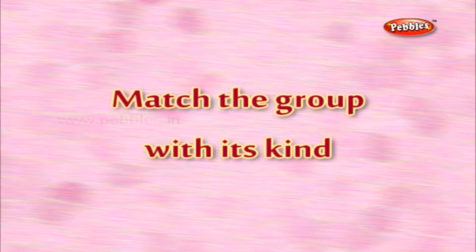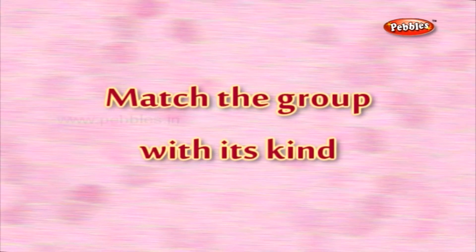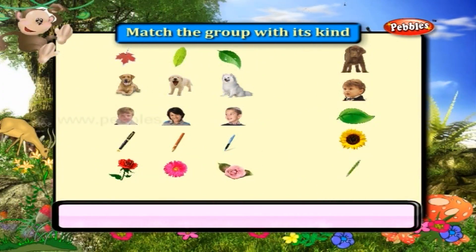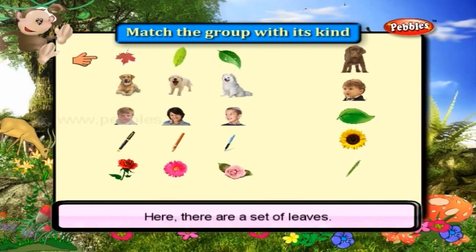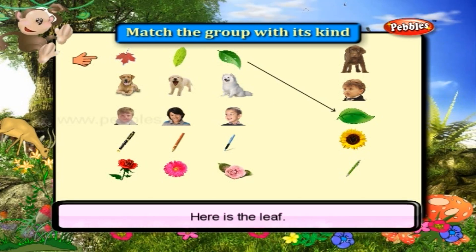Match the group with its kind. Here there are a set of leaves. Find the same kind on the other side. Here is the leaf.